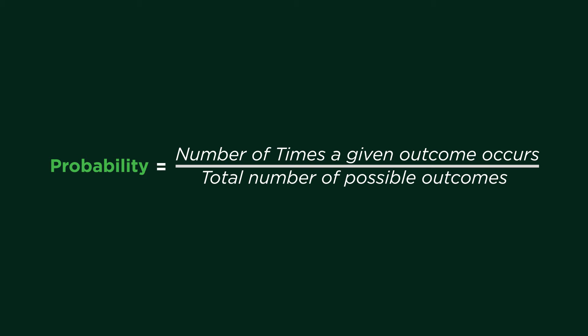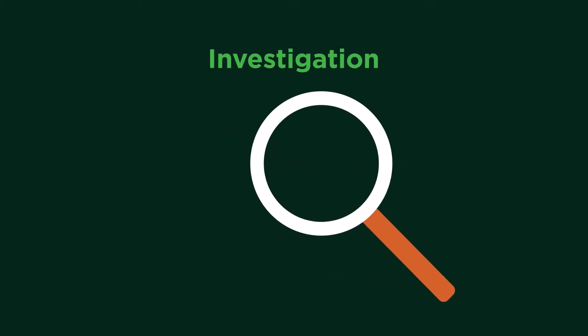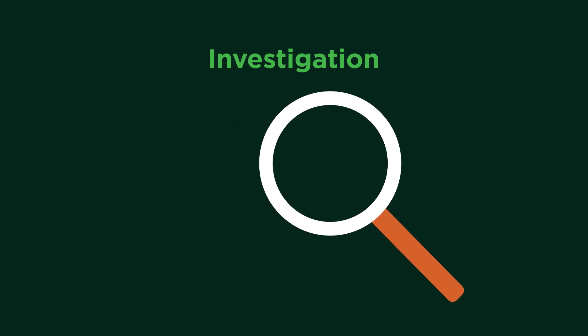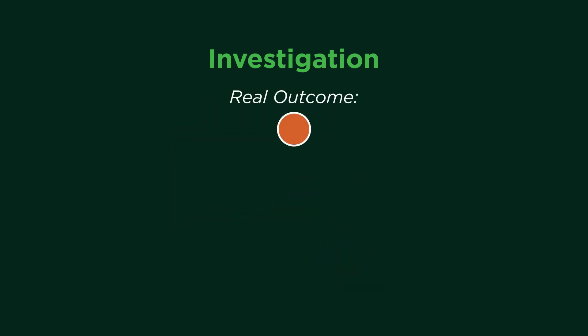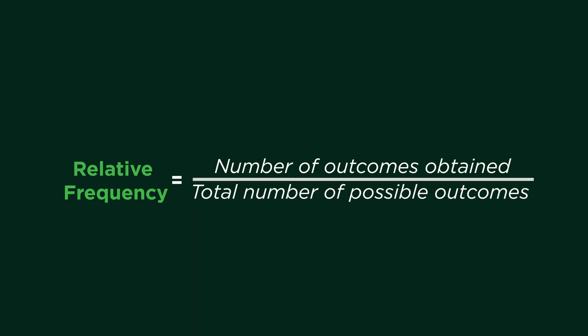Sometimes it will occur that it is difficult to find the probability of an event happening. You can then do an investigation to calculate probability. When investigating, you compare the real outcome of a given event with the total number of possible outcomes. This can be done by calculating the relative frequency of a given outcome. The relative frequency of an outcome is the ratio between the number of outcomes obtained and the total number of possible outcomes.